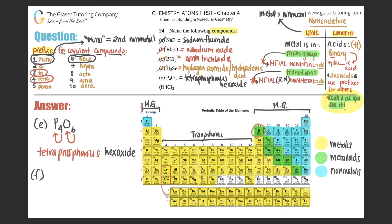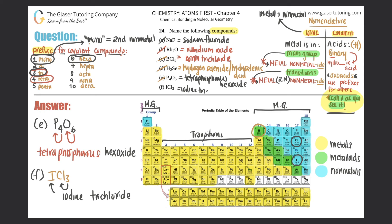For (f), ICl₃. Iodine is a non-metal and chlorine is a non-metal, so this is covalent. There's no hydrogen, so it's not an acid. Use the 'call it as you see it' method. There's one iodine — since it's the first element, you don't say mono, just iodine. There are three chlorines, so three is tri, giving trichloride. The answer is iodine trichloride.